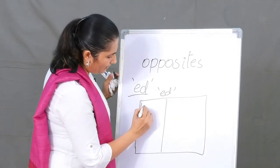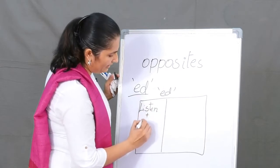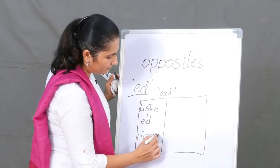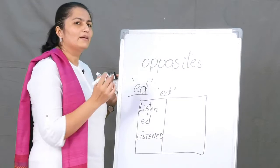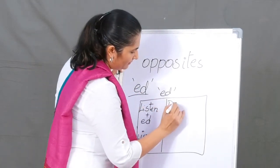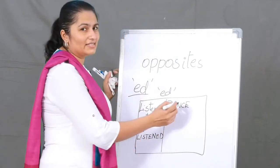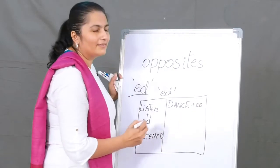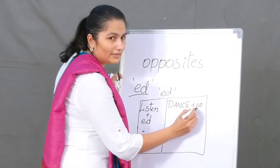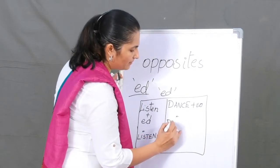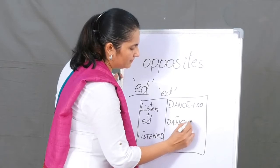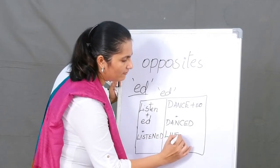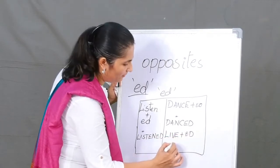Let's take the word 'listen' — when we add '-ed' you get 'listened'. But look at this word: 'dance' — D-A-N-C-E. When you add '-ed' to it, you have to drop the 'e', so it becomes 'danced'. Did you see? Let's take another word: 'live' — 'live' plus '-ed' gives you 'lived'. We had to drop the 'e' again.